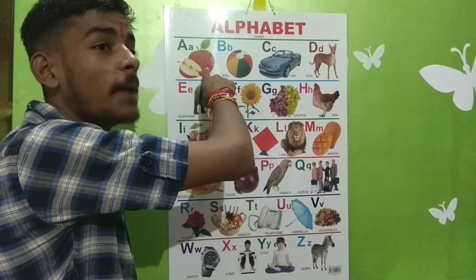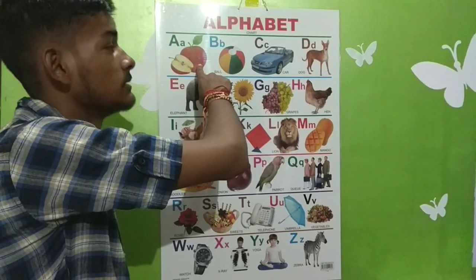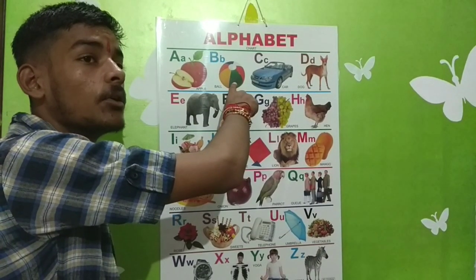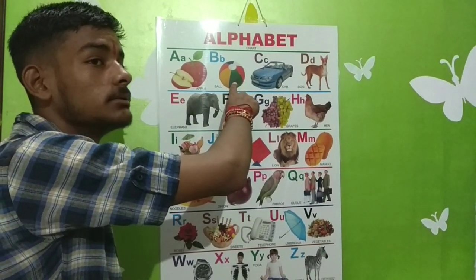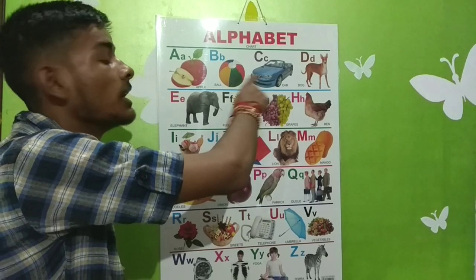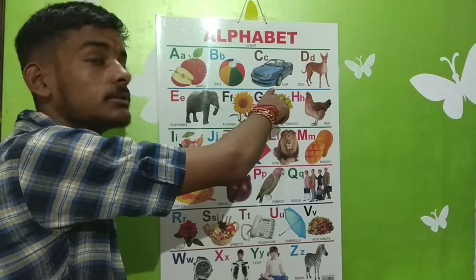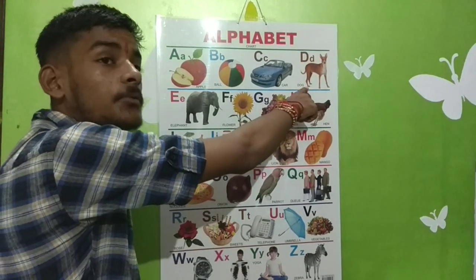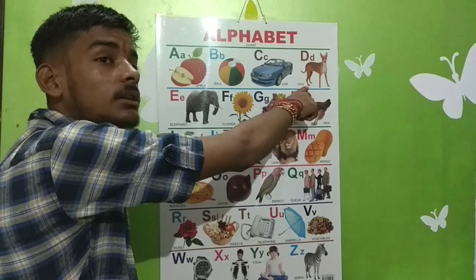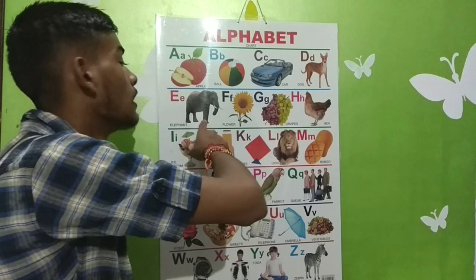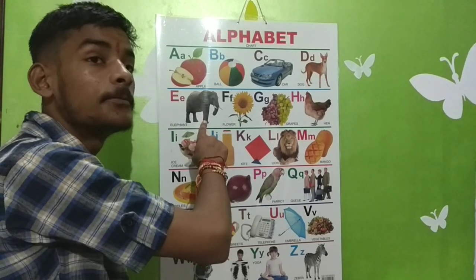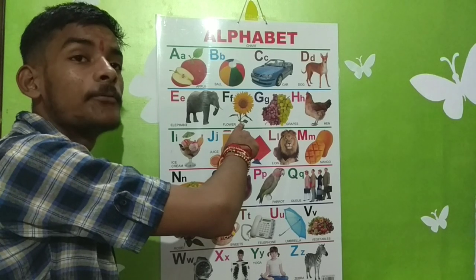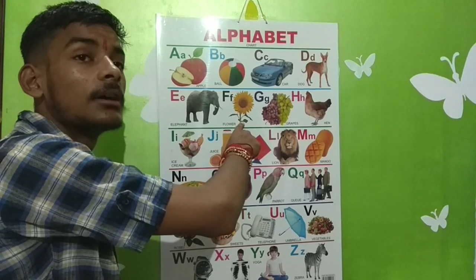A for apple, B for ball, C for car, D for dog, E for elephant, F for flower.